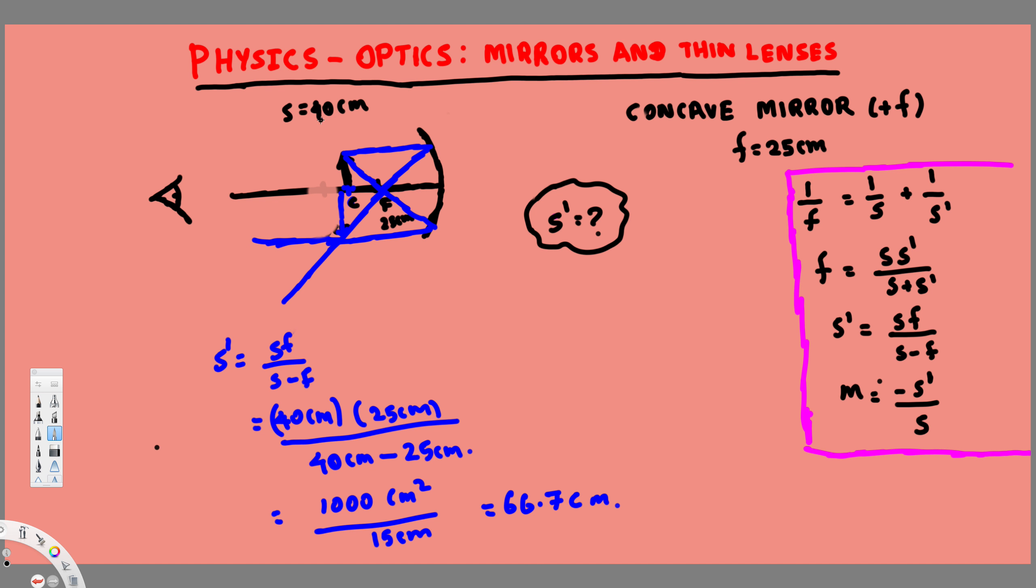Because we already know the object distance is 40 centimeters. 40 centimeters should be between this, which is 50, so 40 centimeters would be between this. Now since we are getting a positive number, we can say this image is real.